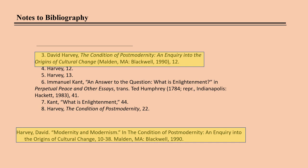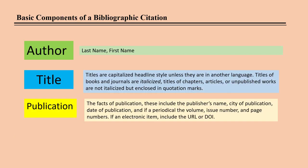It is easy to transform the initial footnote entry of an item into a bibliographic entry for the same item, as illustrated here. There are minor changes to the author's name and periods in the bibliographic citation where commas appear in the footnote, and a few other changes as well. This video will show you the differences between your footnote citation and your bibliographic citation. The basic components of a bibliographic citation are the author's name, last name first, and the title capitalized headline style with book titles in italics and article titles in quotation marks.